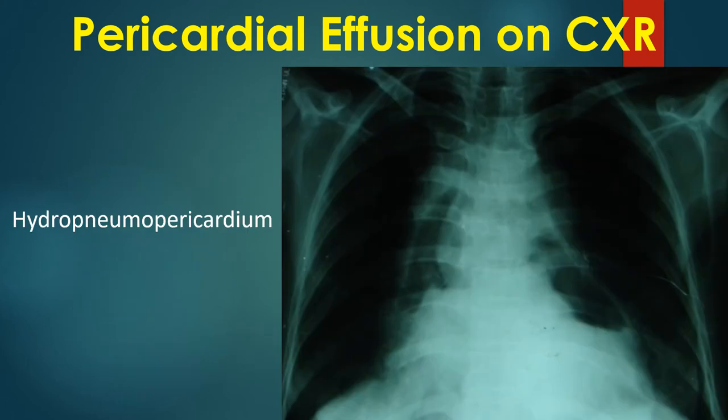Here is a chest X-ray showing hydropneumopericardium with an air-fluid level clearly seen on the left side. Pericardial thickness can be appreciated between the air in the lungs and air in the pericardial cavity.